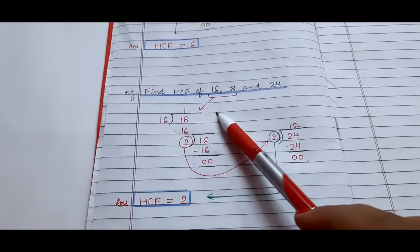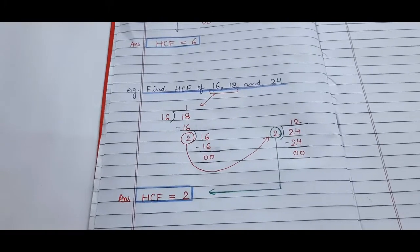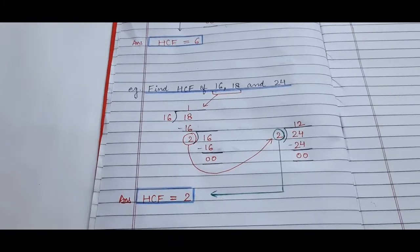So the HCF of 16, 18, and 24 is 2. I hope it is clear to you all.